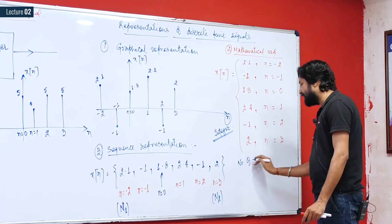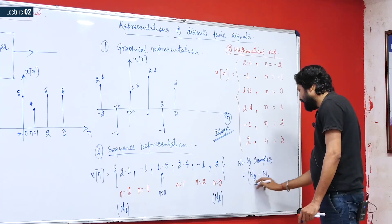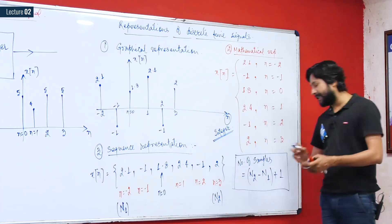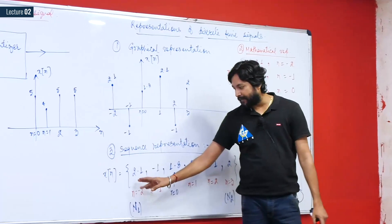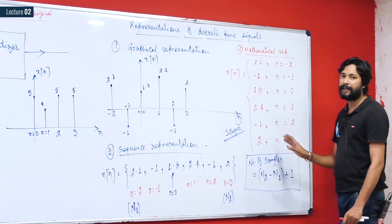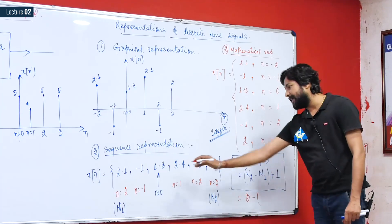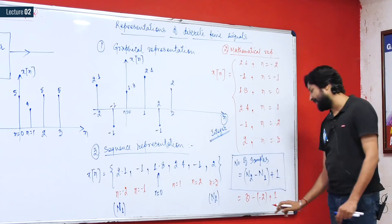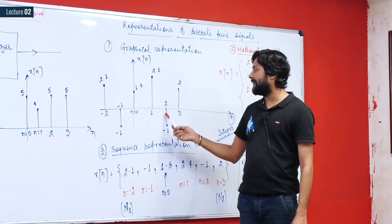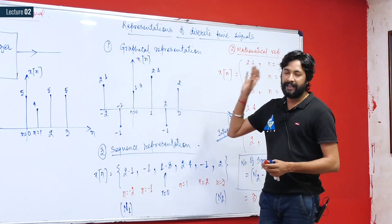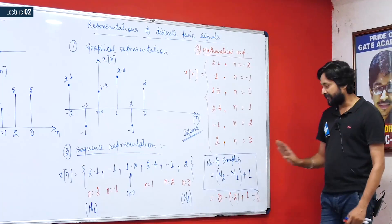Let n1 be the leftmost value of n and n2 be the rightmost value. For this signal, n1 = -2 and n2 = 3. The number of samples in a discrete-time signal is given by: number of samples = n2 - n1 + 1. Here: 3 - (-2) + 1 = 3 + 2 + 1 = 6. Counting directly confirms there are 6 samples, verifying this formula.